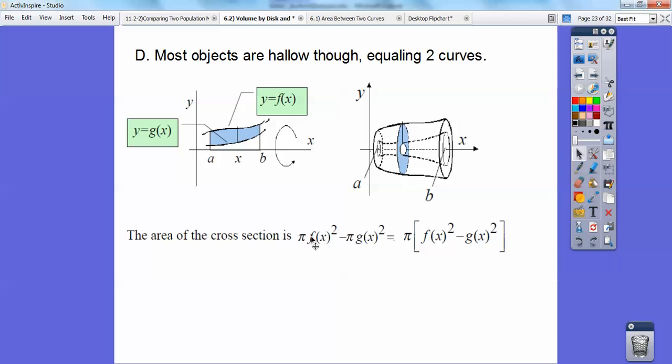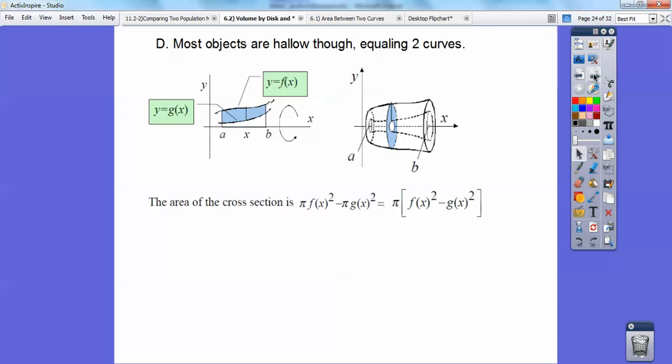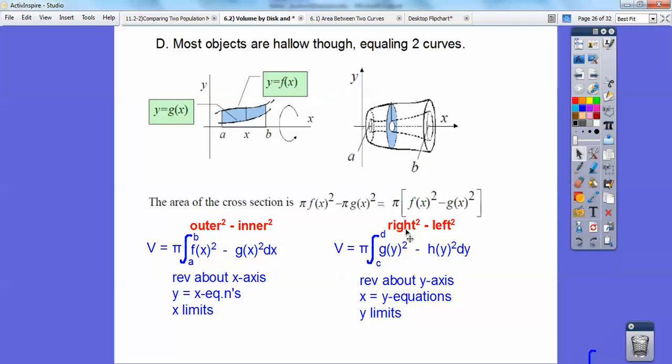So, here's my pi r squared. This is my outer circle minus my pi r squared inner circle right there. So, it's going to get me this integral right here. Outer squared minus inner squared. So, f of x squared minus g of x squared. There's my pi r squared minus the other pi r squared. And this is when it's revolved about the x-axis, and it's y equals x equations with x limits. And if it's going around the y-axis, then we do the right, right e minus left e on that one, when it's going around the y-axis right there. Well, x equals y equations and y limits.